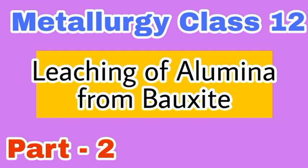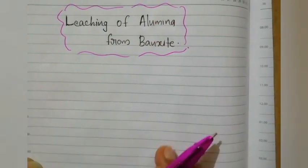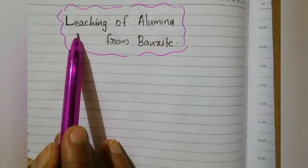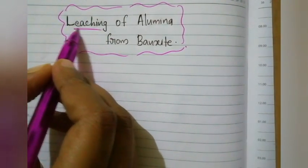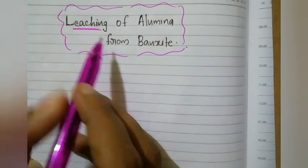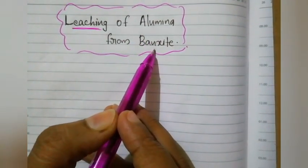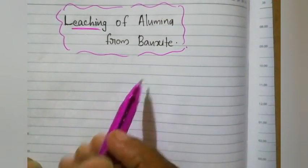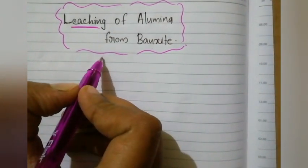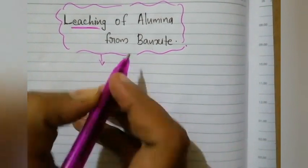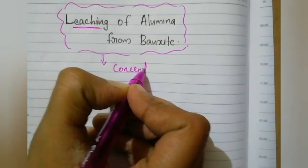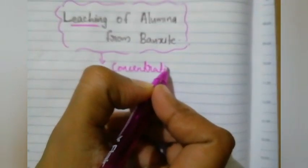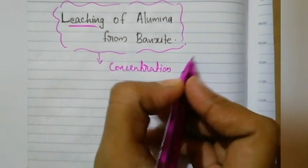We have already uploaded an introduction. We are going to discuss leaching of alumina from bauxite. In the last video, we discussed the concentration of the ore and went over three methods. The next method is leaching of the ore. Leaching is an example for the concentration of ore.